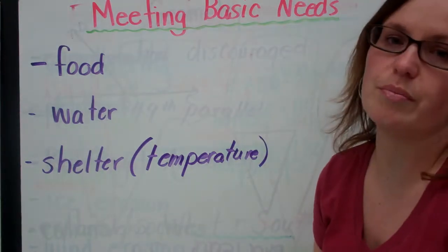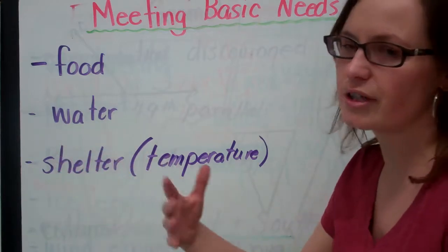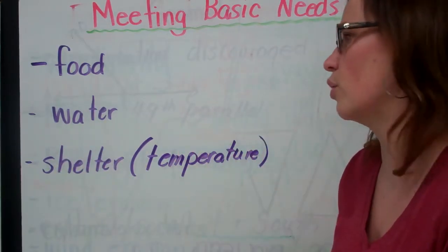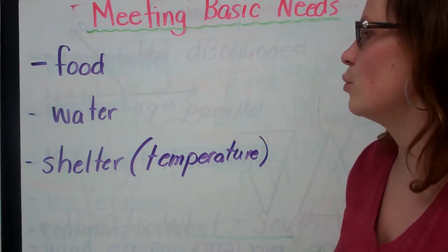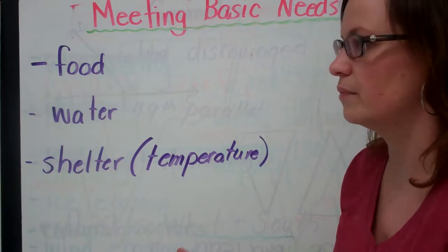We also do this to meet our basic needs. Our basic needs are food, water, shelter. And our shelter gives us that ideal temperature, helps us keep us warm, keeps us cool. And we alter the landforms to meet these needs.